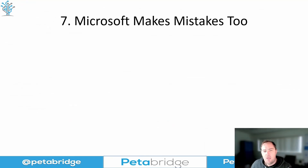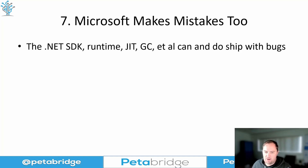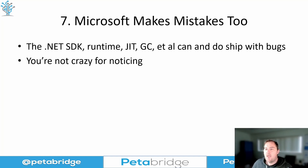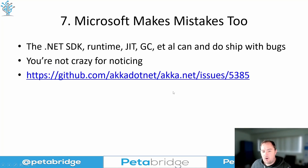Number seven: Microsoft makes mistakes too. No software company is immune from introducing bugs. The data SDK, the runtime, the JIT, the garbage collection system, all the core libraries — they can and do ship with bugs, and you're not crazy for thinking something might be a bug Microsoft has made. Here's an example: this is a bug from 2021, not long after .NET 6 shipped. We noticed a performance regression in the .NET 6 thread pool.